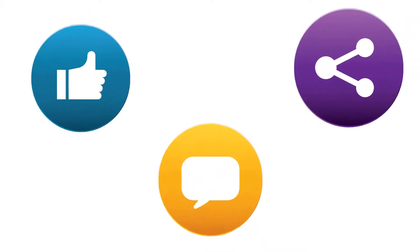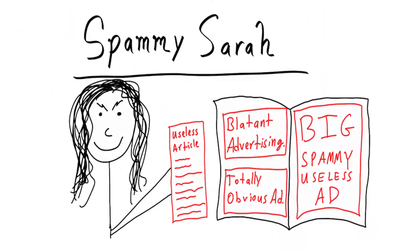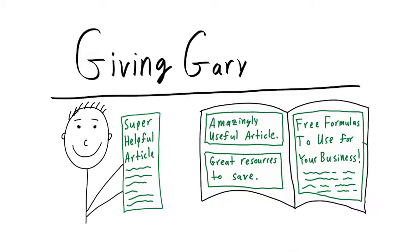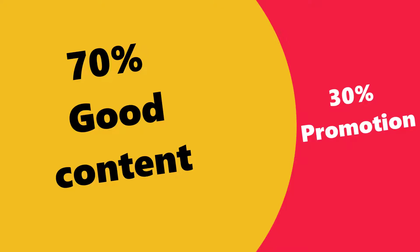Most people don't like, engage, or share plain old advertisements. So you don't want to be Spammy Sarah, who just throws in a blatant advertisement nobody likes — no one's going to like that, engage with that, or share that. You want to be more like Giving Gary, who gives awesome content and slightly blends the advertisement into the editorial content. Giving Gary strives to give even better information than the actual publication gives. While he also mentions his product, no one minds because he sticks to the 70% great content and 30% sales pitch rule.